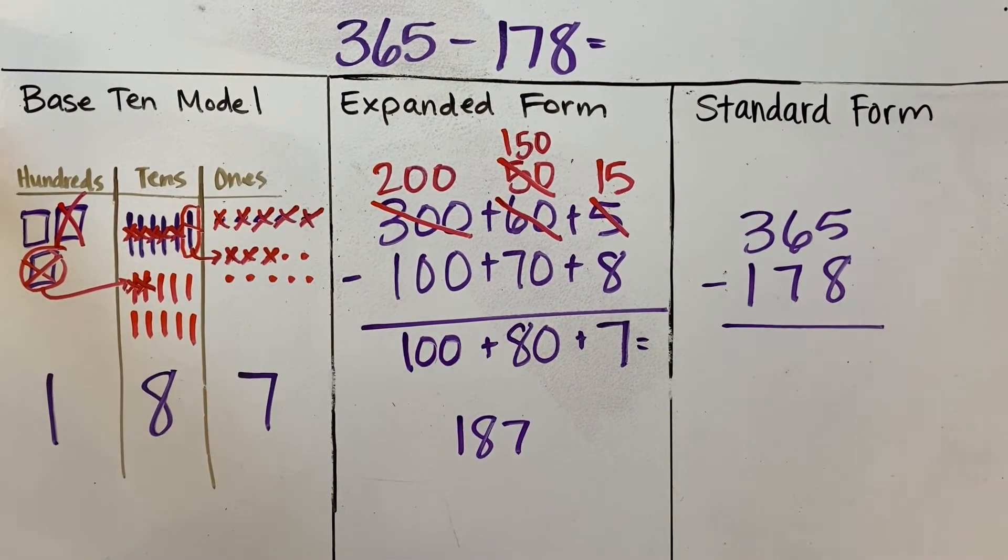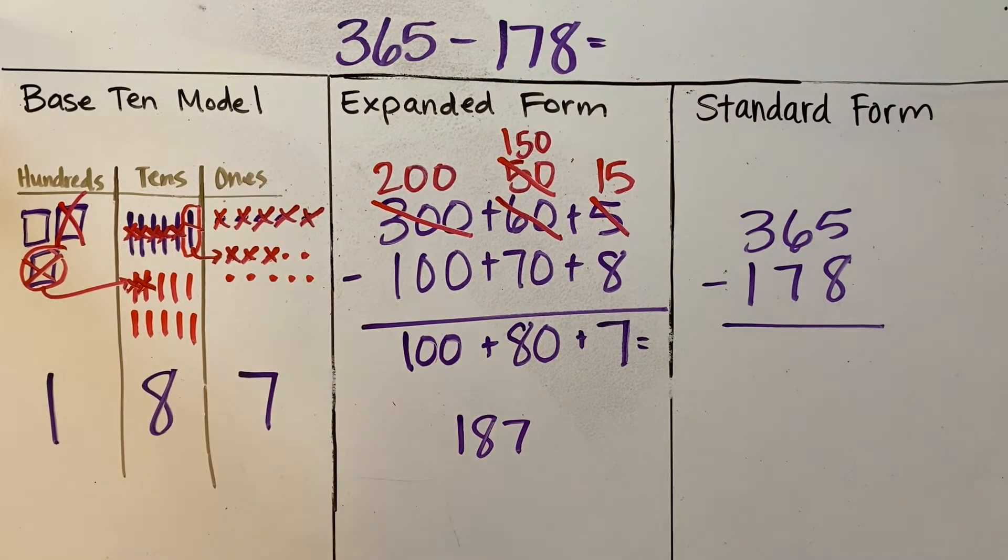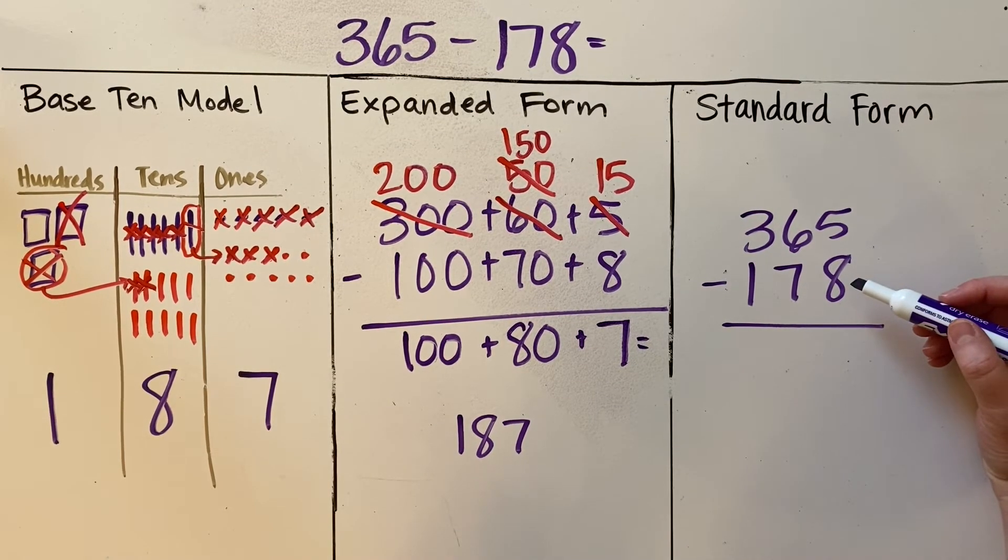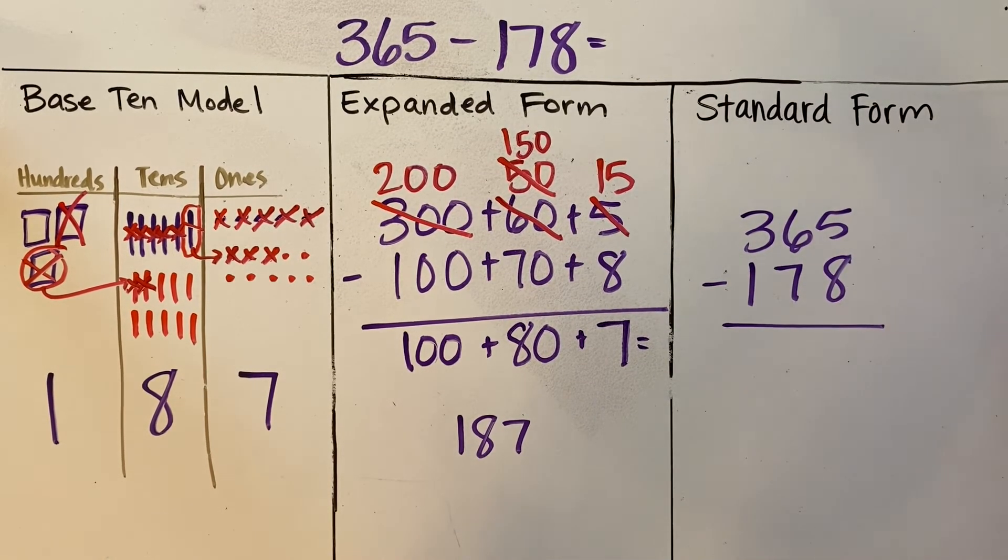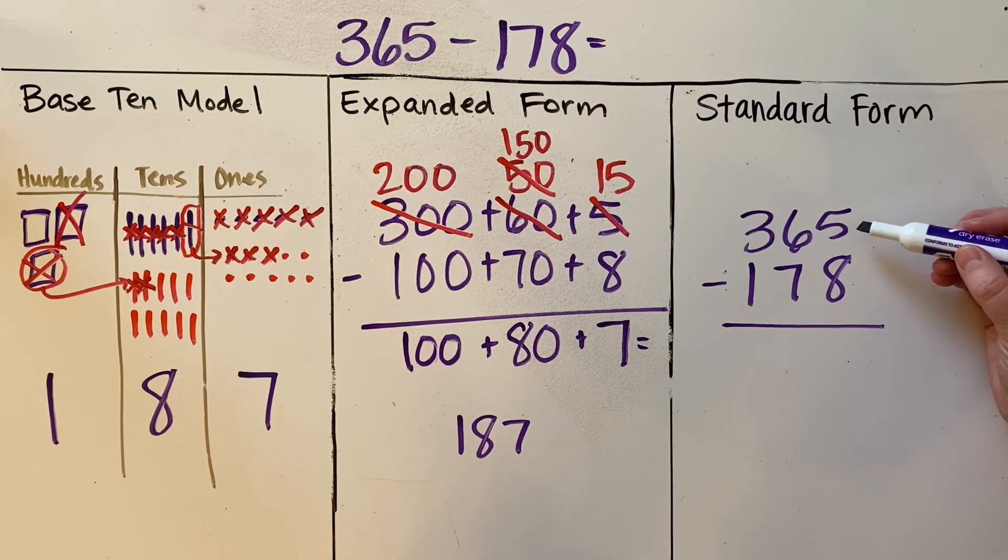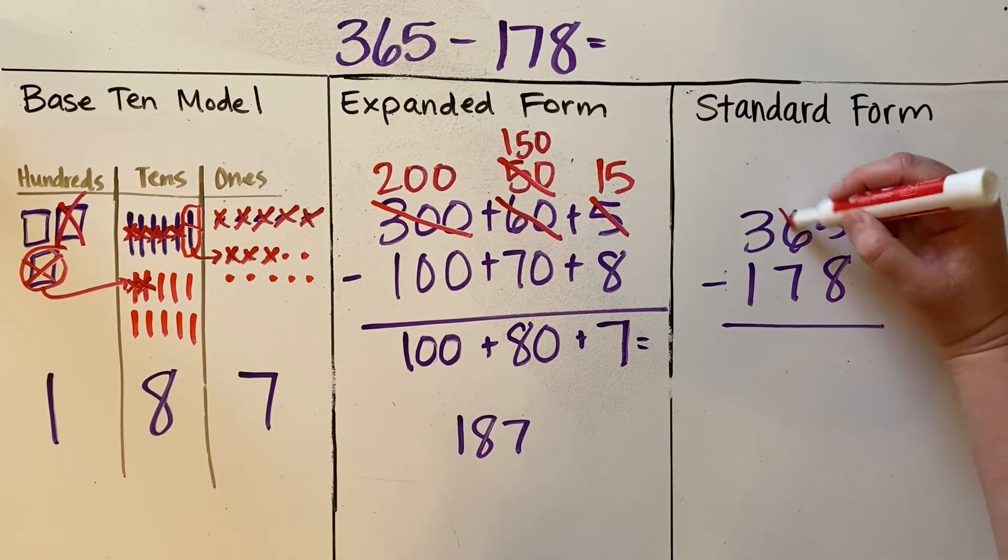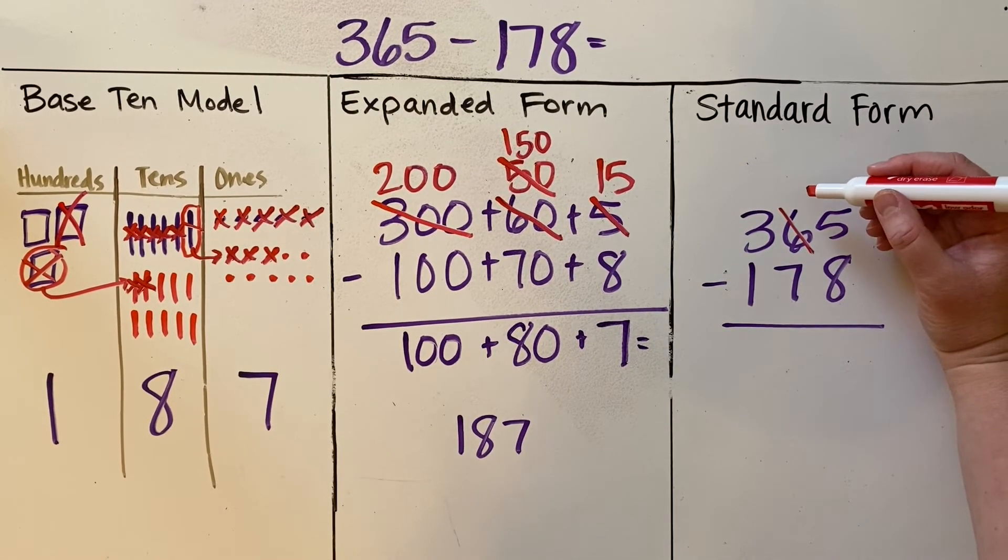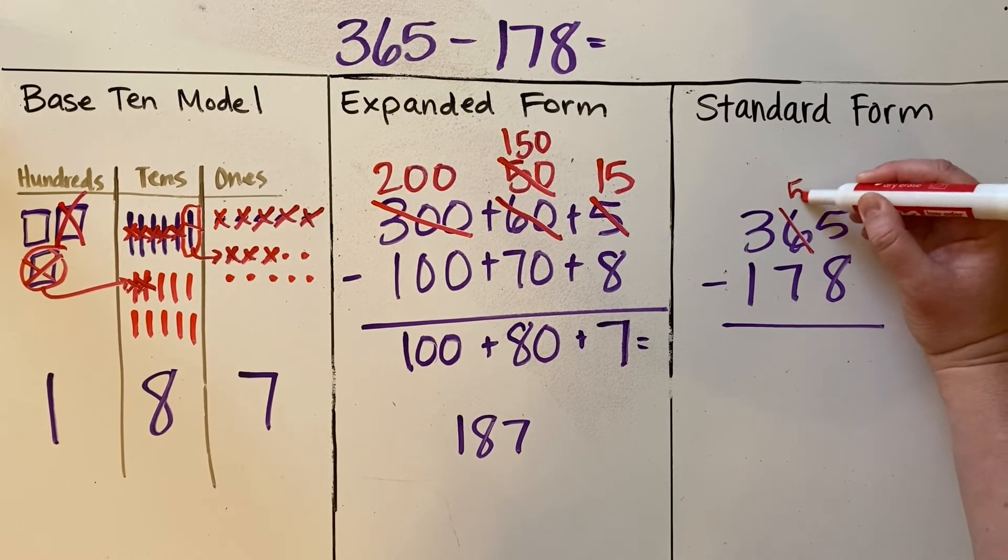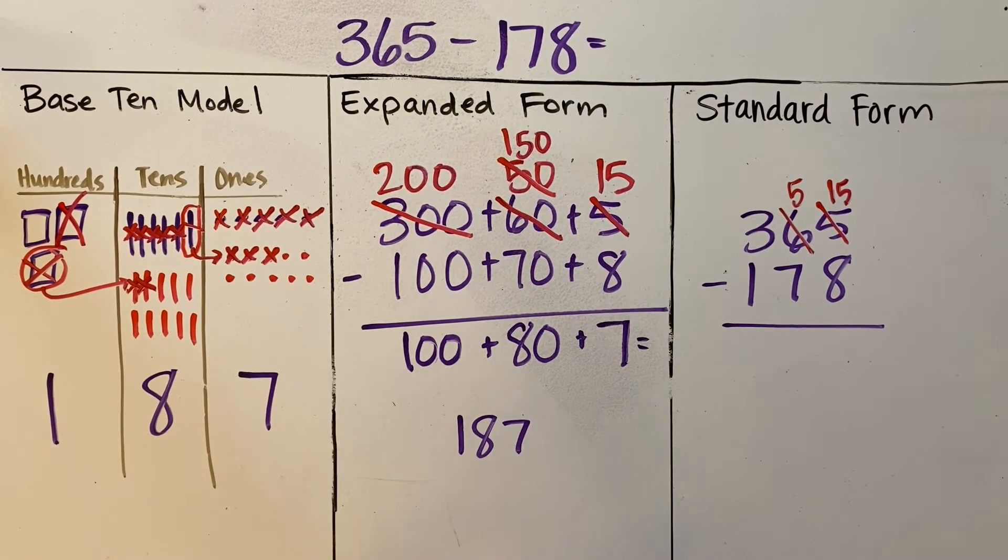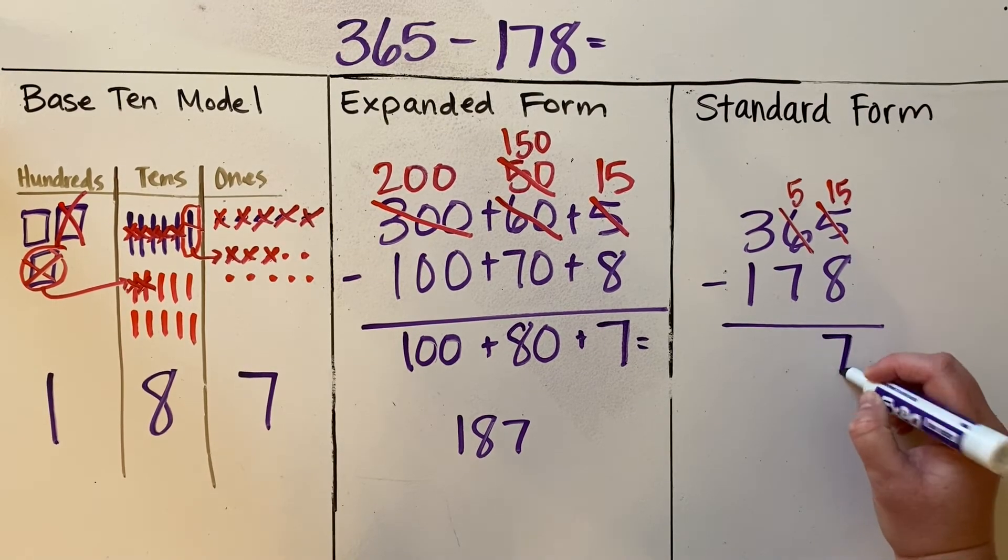It looks very similar to what we have on our base-10 model. Now, if we look over to our standard form, five minus eight—we're not able to do that for the same reason as before. The eight is larger than five, and so there's not enough to be taken away. So we're going to do some regrouping. I'm going to decompose the 10 and put it into the ones place. So now there are 15 ones. 15 ones minus 8 ones is 7 ones.